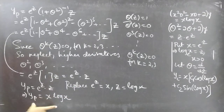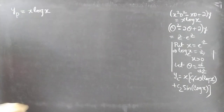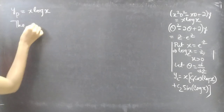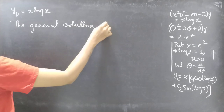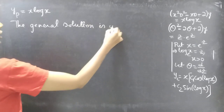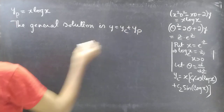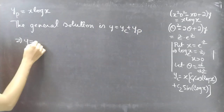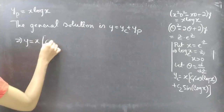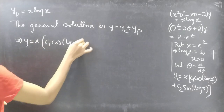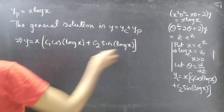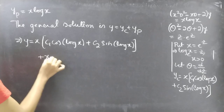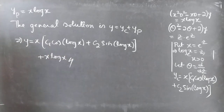So we have found both yc and yp. The general solution is y equals yc plus yp, which gives y equals x times (c1 cos(log x) plus c2 sin(log x)) plus x log x. This completes the problem.